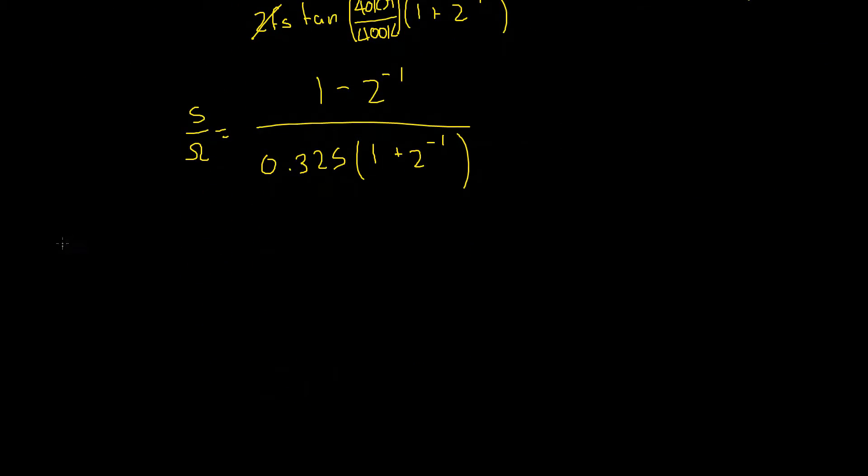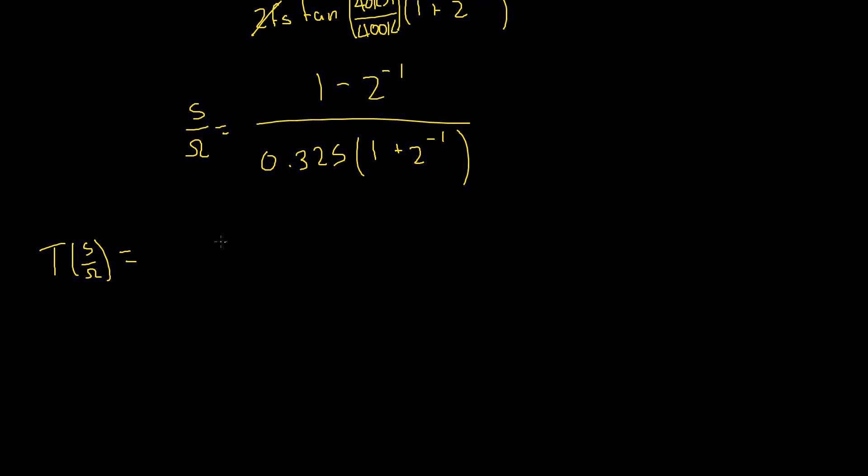And we can make the substitution back into our original equation 1 divided by S plus 1. That will give us 1 on the top, and remember, this is T of S divided by omega, 1 divided by 1 minus z to the power of negative 1, divided by 0.325 plus 0.325 z to the power of negative 1. So I've simply just expanded the brackets there. Okay, and remember, that's all plus 1.